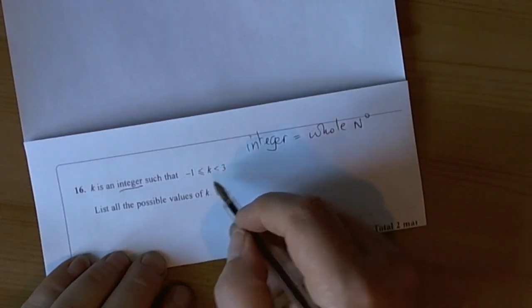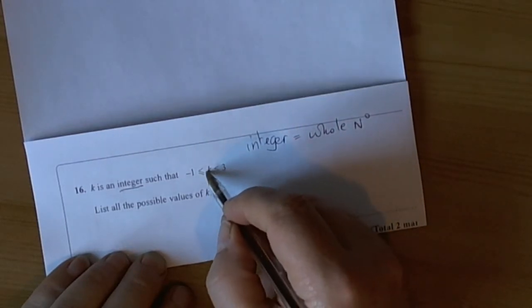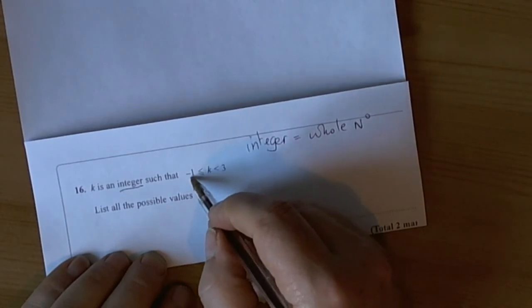So let's have a look at what this statement actually says. Well it's telling me that the k values have to be greater than or equal to minus 1.